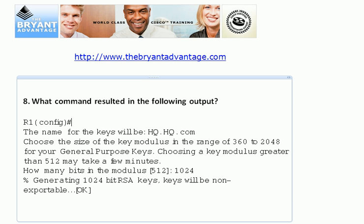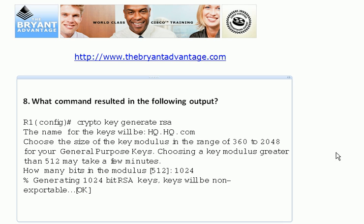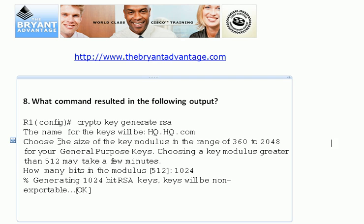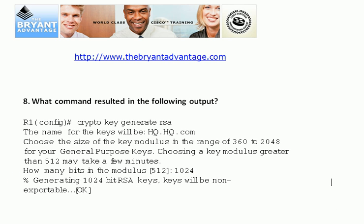Question eight's answer is a bit of a mouthful: crypto key generate RSA. That's exactly what the output shows — it prompts how many bits you want in the modulus. Entering 1024 generates the keys and then you get the message that the keys are being generated.